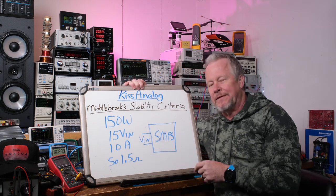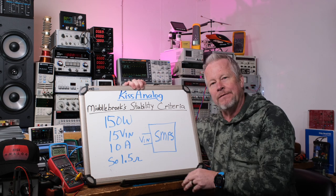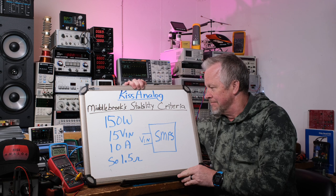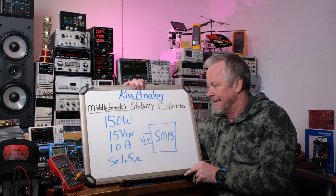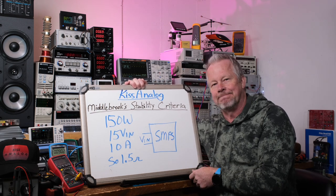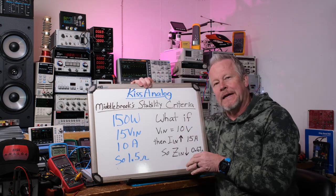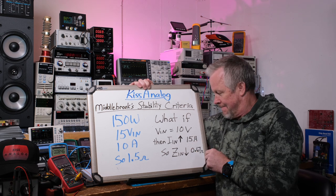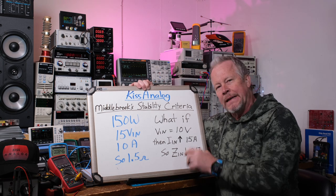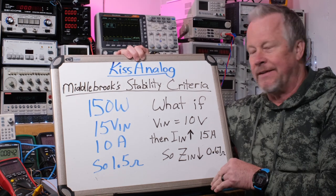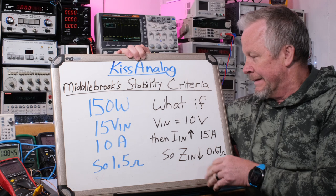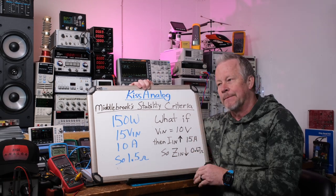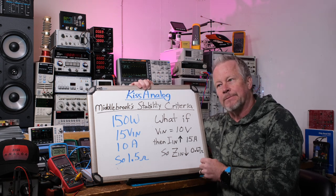Let's say we have 150 watts going into this power supply and we're feeding it 15 volts. That means we need 10 amps, which comes out to 1.5 ohms input impedance — seems pretty basic. But what if the input voltage drops down to 10 volts? Then the input current would have to go up to 15 amps to maintain 150 watts, which means the input impedance would appear to drop down to about 0.67 ohms. As the voltage drops the impedance is dropping — that looks like negative resistance.